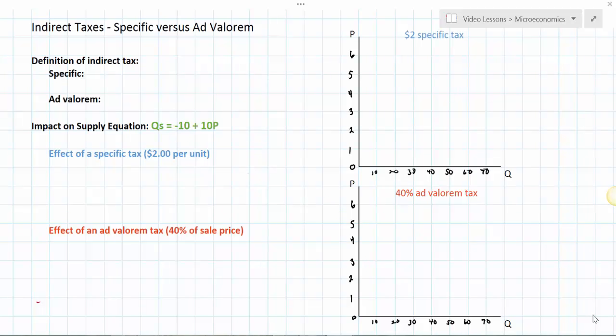In this lesson we're going to focus on one type of government intervention in the market for a particular good. We'll be looking at indirect taxes. We'll define indirect tax and distinguish between two types of indirect tax, a specific and an ad valorem tax. Then we'll do a graphical analysis of the impact that each of these types of tax will have on the supply of a good, and we'll further expand our understanding of the impact of these taxes by examining how they affect the supply equation for a good.